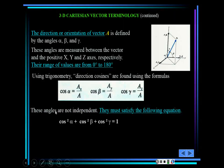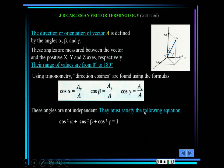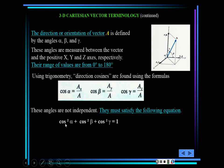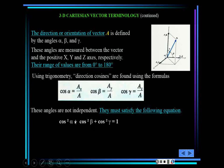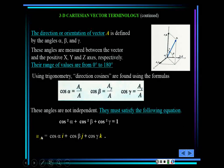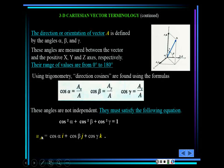Copy this, or highlight it — this material is posted. These angles are not independent; they must satisfy: cosine²(alpha) + cosine²(beta) + cosine²(gamma) = 1. You can prove this because substituting in gives ax² + ay² + az² divided by A², which equals 1. The unit vector is then: cos(alpha)·i + cos(beta)·j + cos(gamma)·k. The advantage is that magnitude times unit vector gives you the full vector.